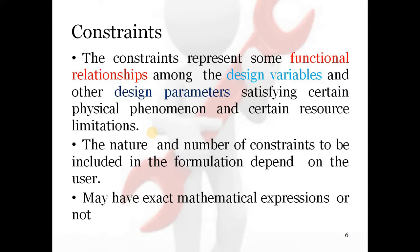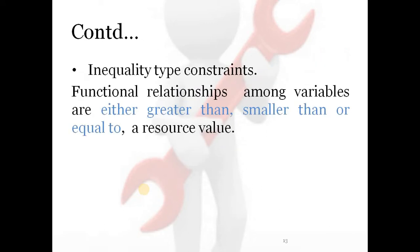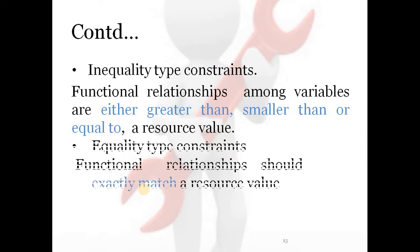Each and every optimization problem has some constraints. These constraints are functional relationships among the design variables. The nature and number of constraints included in the formulation depend on the user. Constraints may have exact mathematical expressions or not. If there is no exact relation, those are categorized as inequality type constraints, having a relation of either greater than or smaller than. If the relation exactly matches, those constraints are equality type constraints.